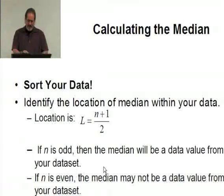If N is odd, the median will be a data value from your data set. If N is even, the median may or may not be a value from your data set, depending on the actual values. There's no requirement, absolutely no requirement whatsoever, that the mean or the median actually be values in your data set.